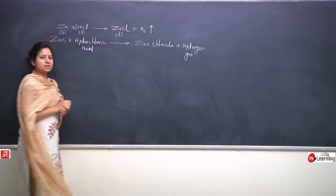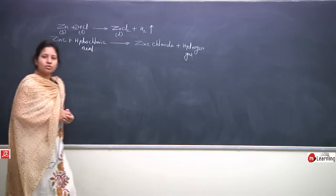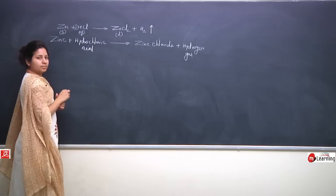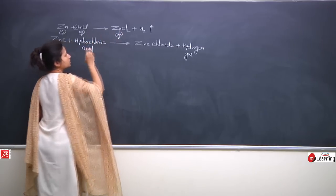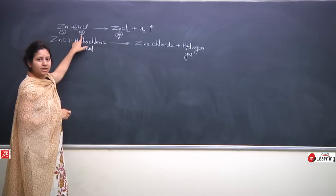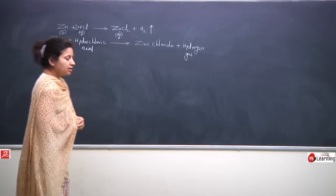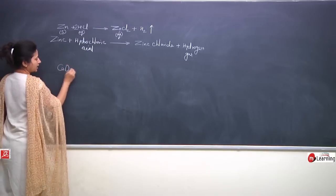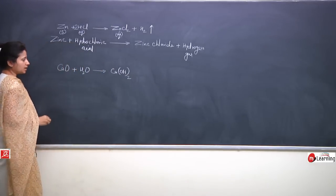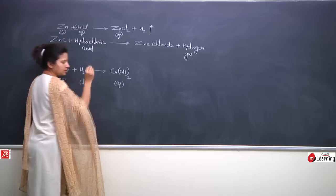Instead of writing 'liquid', we can write 'aqueous' — meaning it is water soluble. For example: CaO (s) + H2O (l) → Ca(OH)2 (aq). Calcium oxide is solid, H2O is liquid — water is always used in liquid state — and calcium hydroxide is aqueous solution. Next: BaCl2 (aq) + H2SO4 (aq) → BaSO4 (s) ↓ + 2HCl (aq). Barium sulfate is solid because it forms a precipitate; the downward arrow shows it is depositing in the solution.